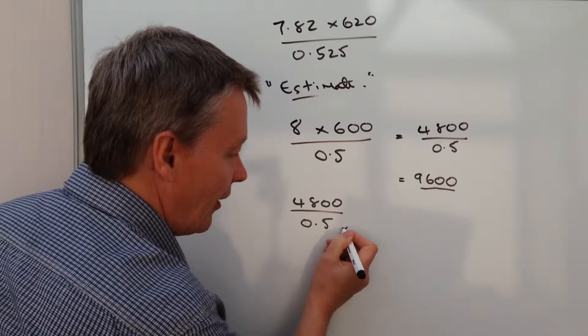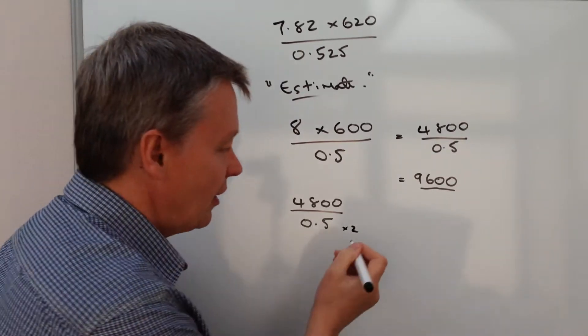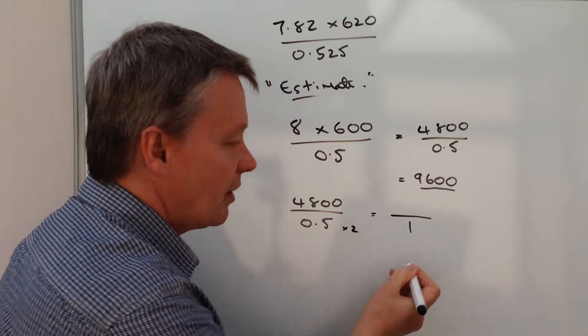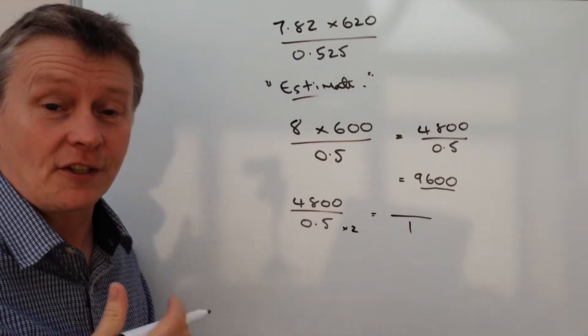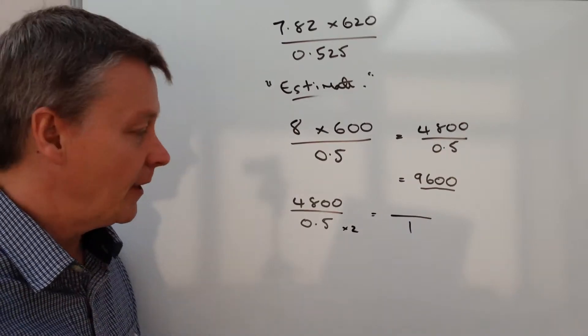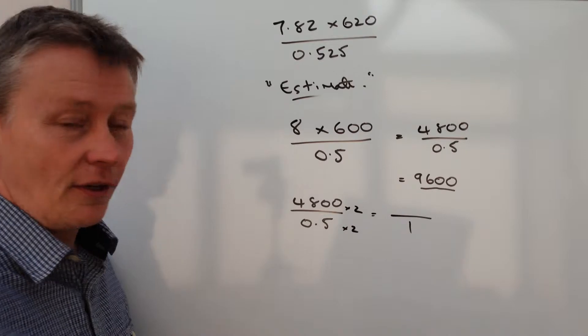What I'm going to do is multiply that by 2, because if I multiply it by 2, it means that the bottom is going to be 1. A half times 2 is 1, so that's going to make it much easier for me. But if I multiply the bottom by 2, I have to multiply the top by 2.